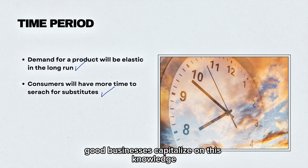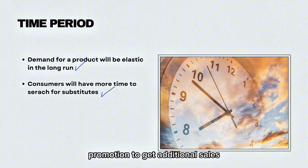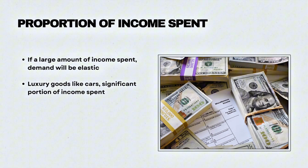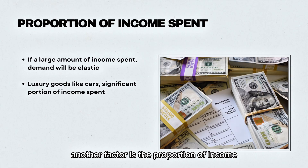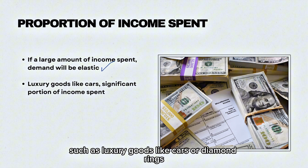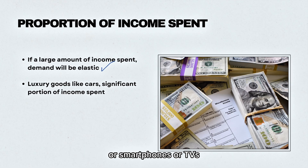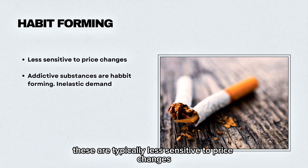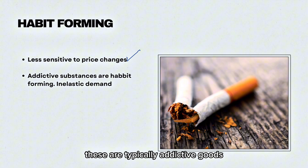Businesses capitalise on this knowledge by offering short-term sales promotions to get additional sales, because they know that if consumers had too much time to think they will simply go somewhere else. Another factor is the proportion of income spent on a good or service — if a large amount of income is spent, demand will typically be elastic, such as luxury goods like cars, diamond rings, smartphones, or TVs. Habit-forming goods such as cigarettes and sugar are typically less sensitive to price changes.